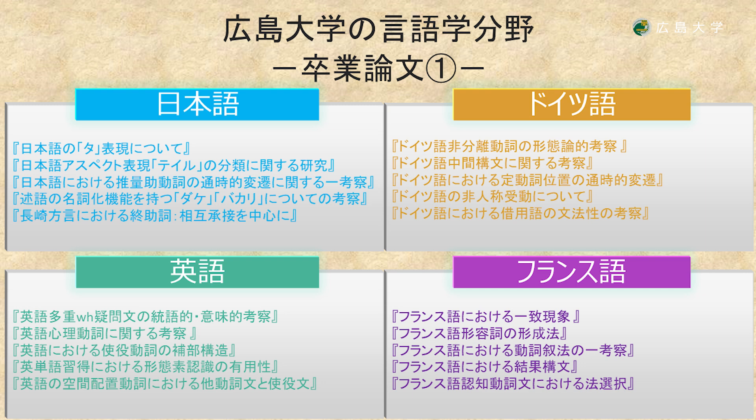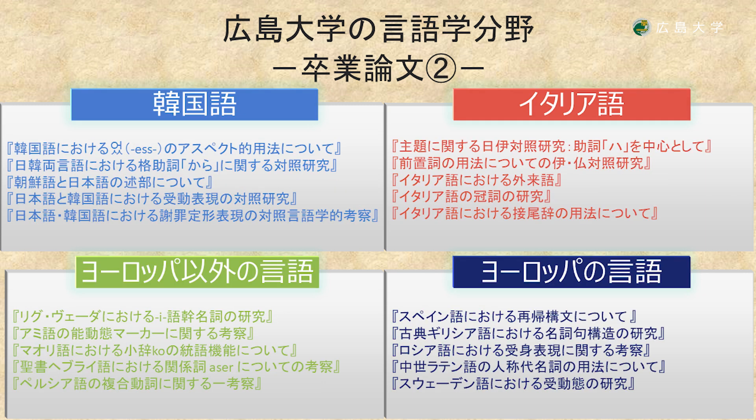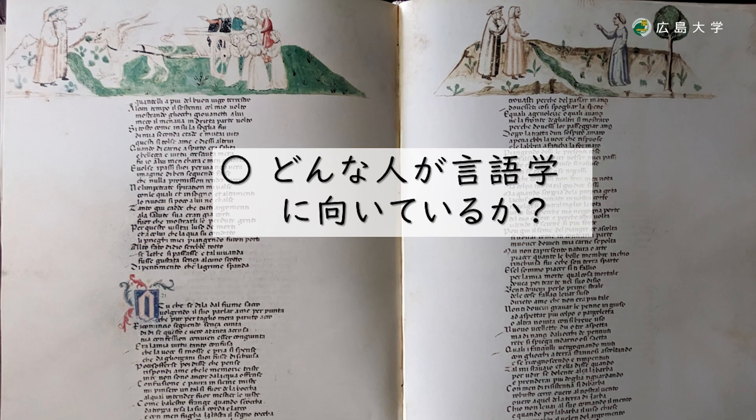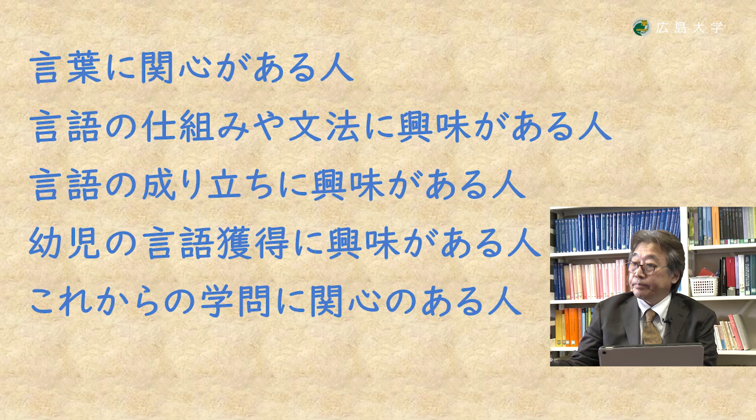この中で7月の卒業論文大目発表会と10月の中間発表会を通して、4年生のときに学部の集大成である卒業論文を完成させていくことになっております。卒業論文に関しては言語学分野は射程が広いためさまざまな言語や研究スタイルの論文が毎年提出されます。①は日本語・英語・ドイツ語・フランス語といった比較的メジャーな言語の卒業論文の題目です。②は近年増加傾向にある韓国語、そして広島大学言語学の伝統としてイタリア語、そしてそれ以外の言語の卒業論文の題目となっています。